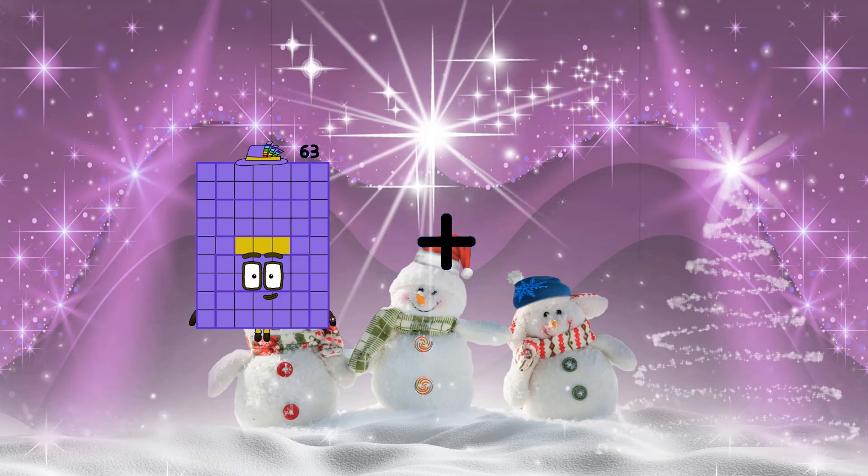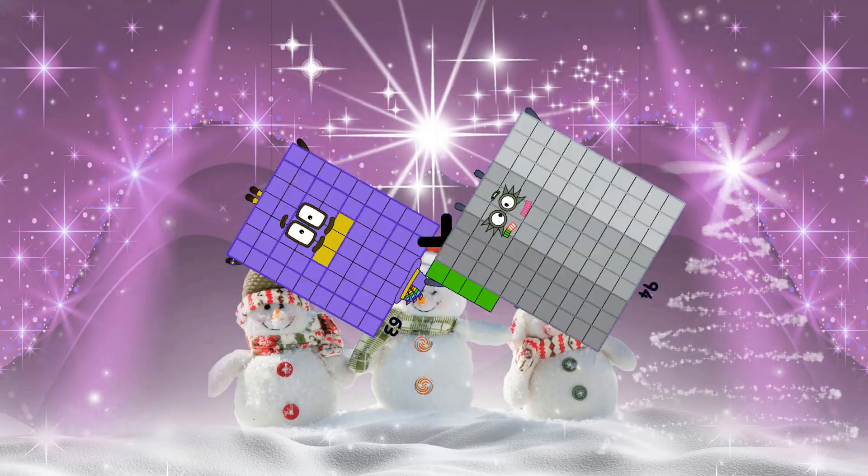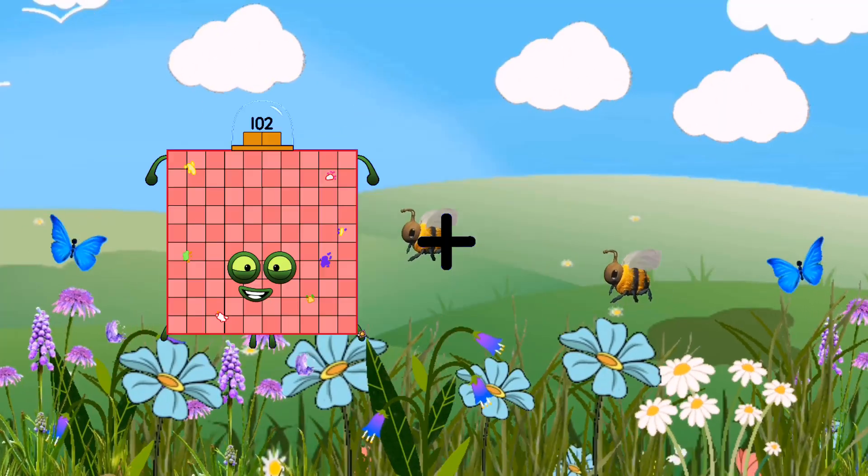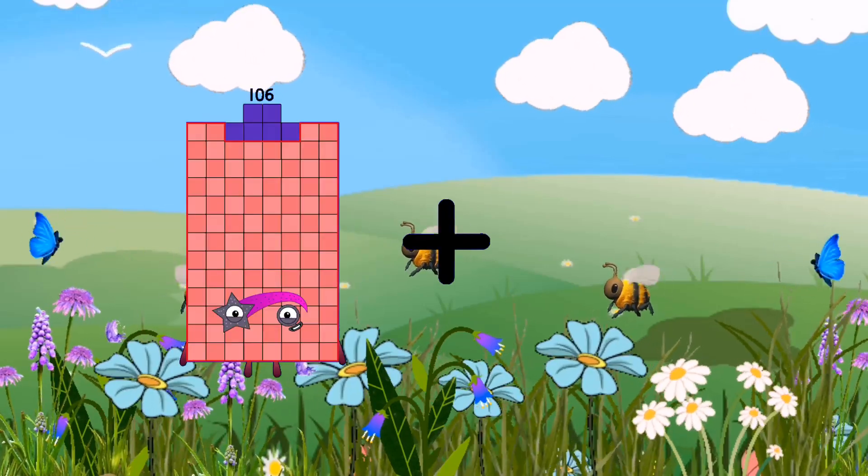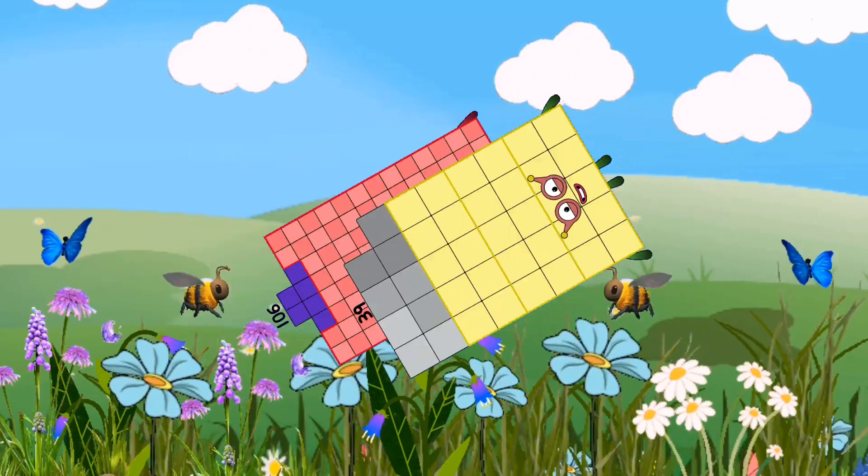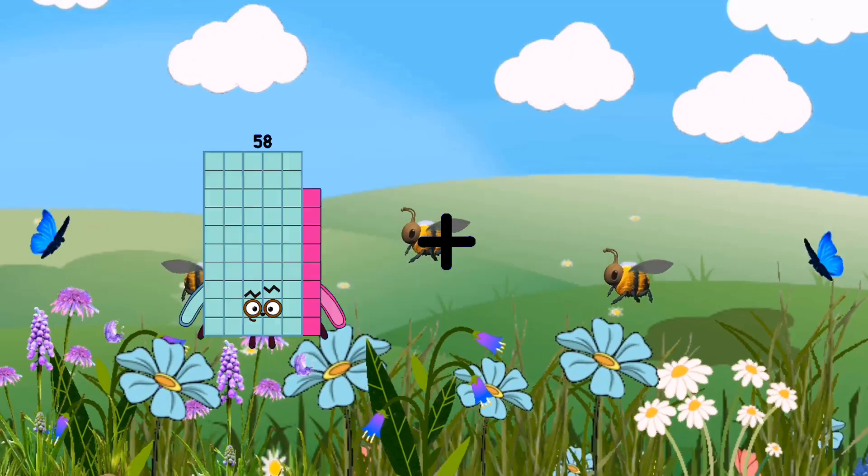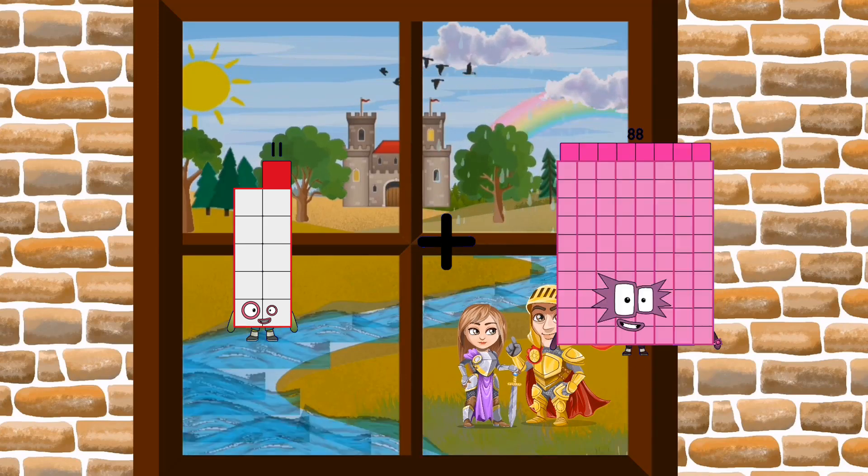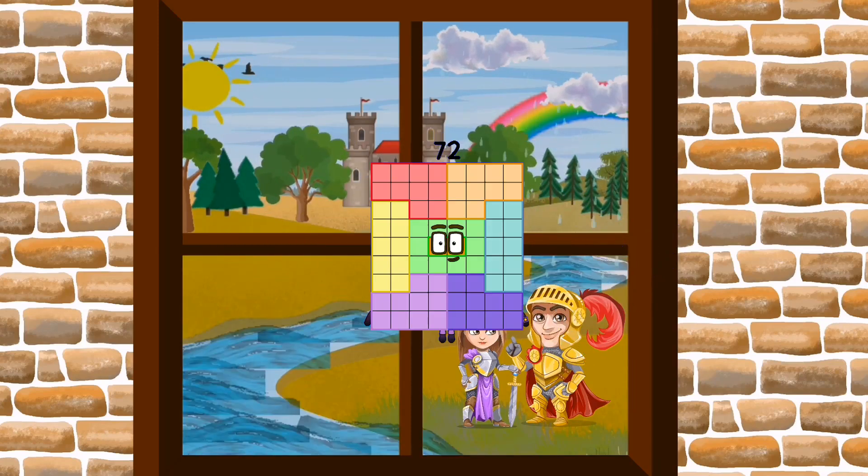63 plus 94 equals 157. 106 minus 39 equals 145. 11 minus 61 equals 72.